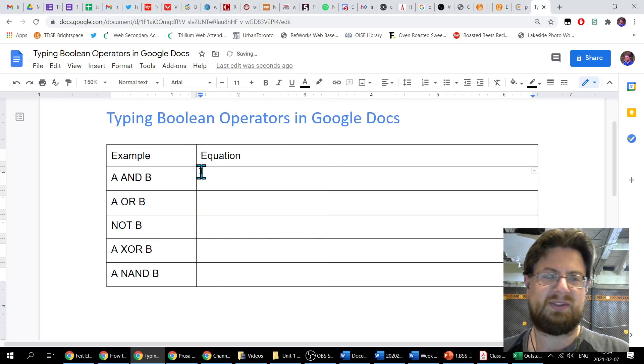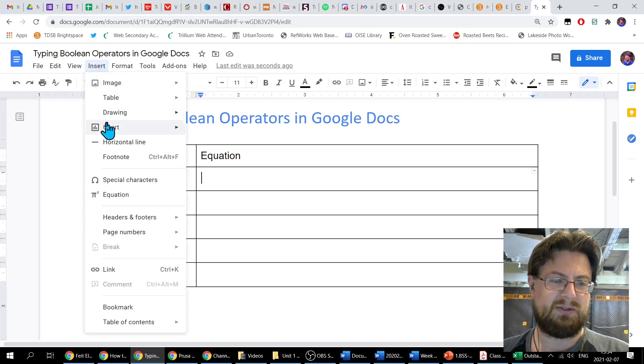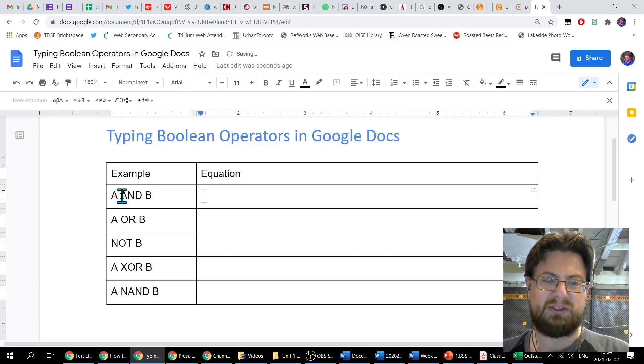Same examples. I've got A and B. I'm going to show you how we would do that. Come up to the insert button up here - insert. You've got an option here for an equation. Click on equation.